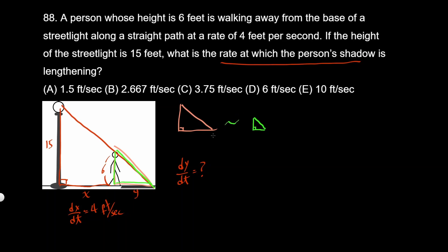That means corresponding sides are in the same ratio. If this is 15 — the height of the big triangle — then the base of the big triangle is x plus y. For the little triangle, if the height is 6, the base will be y. So let's set up a ratio: 15 over (x plus y) equals 6 over y. You could also set it as 15 over 6 equals (x plus y) over y. Let's cross-multiply.